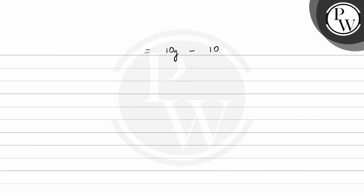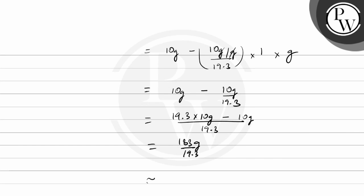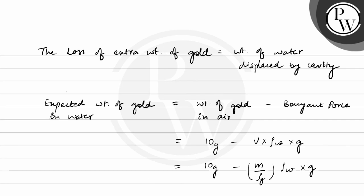This equals 10g minus 10g divided by 19.3, which equals 10g times (1 - 1/19.3), which equals 10g times 18.3/19.3, approximately 9.482g. The loss of extra weight of gold equals the weight of water displaced by the cavity.